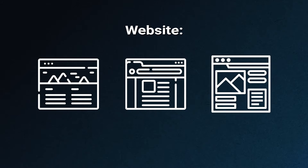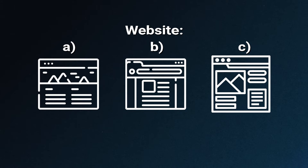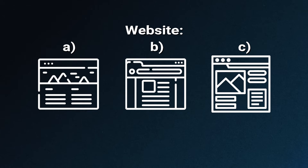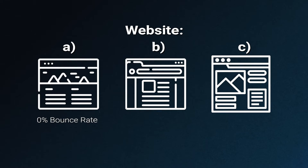Let's take an example. Let's say we have a website with three pages — pages A, B, and C. To simplify, let's assume the site gets one session per day. On Monday, the site gets one session where the visitor lands on page A, then goes to page B, then page C, and exits. What is page A's bounce rate? It is zero, because the visitor entered the site on page A but decided to continue navigating through the website.